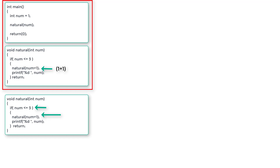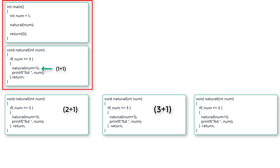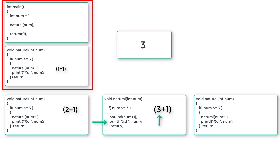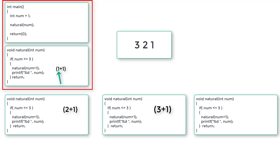2 is less than or equal to 3 — true. Again we call natural and pass 2 plus 1 which is 3. Another instance is pushed onto the stack. Now 3 is less than or equal to 3 — true. We call the function again, passing 3 plus 1 which is 4. 4 is not less than or equal to 3, so the return statement gets executed. Control comes back to the calling function and executes the remaining code, printing the value of num which is 3. Then return executes again, printing num = 2, and then again printing num = 1.